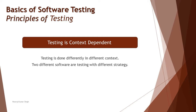The next principle is that testing is context dependent — and the word pretty much speaks for itself. Context deals with the subject matter, the domain, the type of industry, and the type of product you are building. If the products are different, then the strategy and approach to test them will also be different. In simple terms, a safety-critical system is not tested the same way you test an e-commerce website.